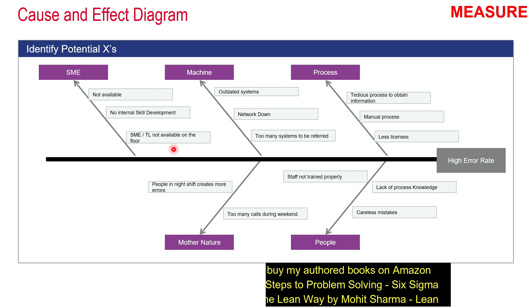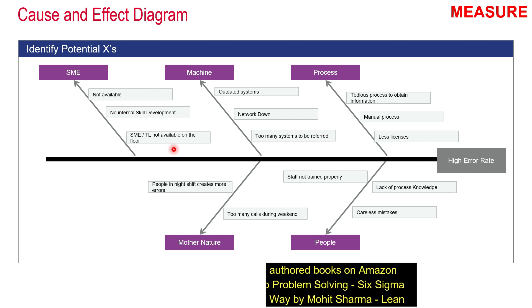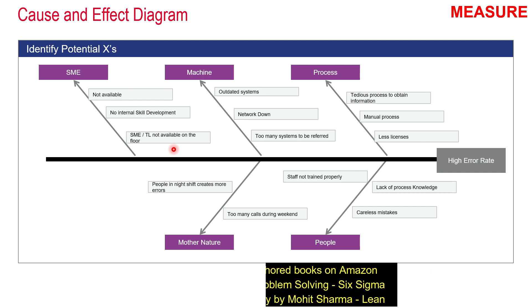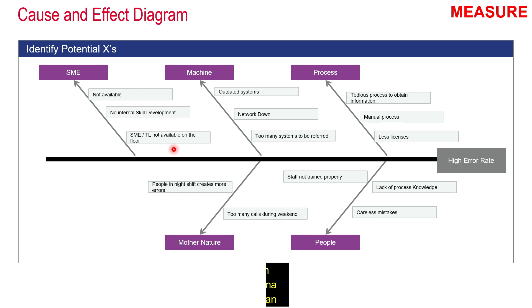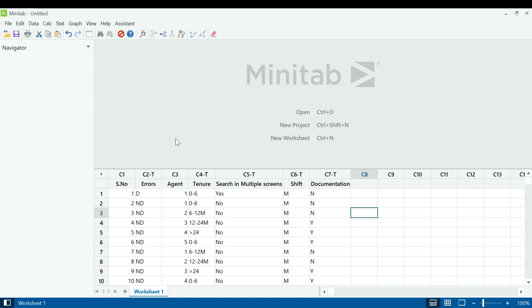The team then created a data collection plan, deciding on a sampling technique and sample size. They used stratified random sampling to collect 200 data points. A detailed video on sampling techniques will be linked in the description box below. Let us now move to Minitab, where the collected data is stored.